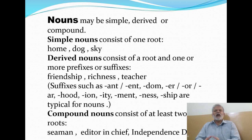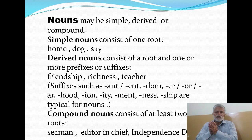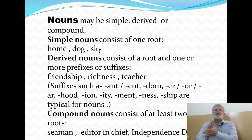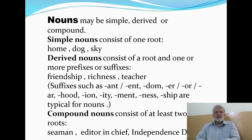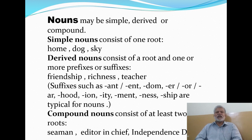Derived nouns consist of a root and one or more prefixes or suffixes. For example, 'friendship' — friend is the root and -ship is the suffix. 'Richness' — rich is the root and -ness is the suffix. 'Teacher' — teach is the root and -er is the suffix. Suffixes such as -ant, -ent, -dom, -er, -ar, -hood, -ion, -ity, -ment, -ness, -ship are typical for nouns — such suffixes are typically used to make nouns.